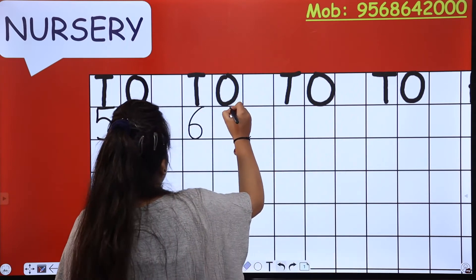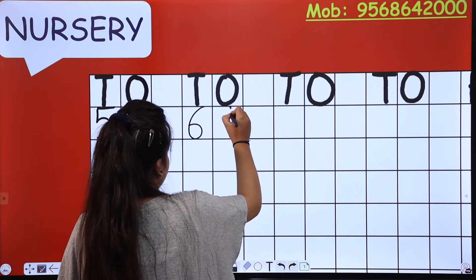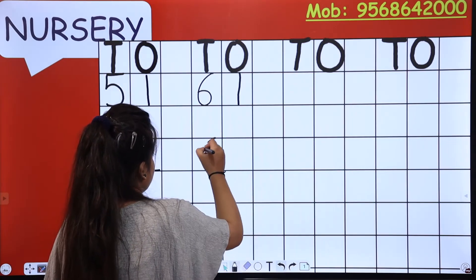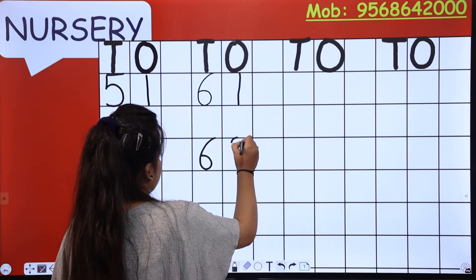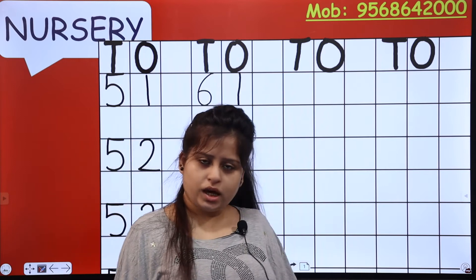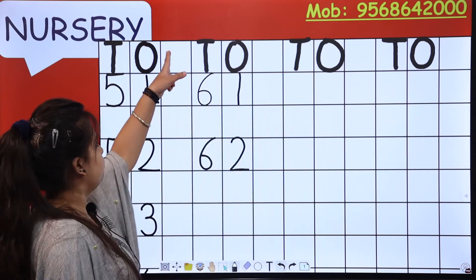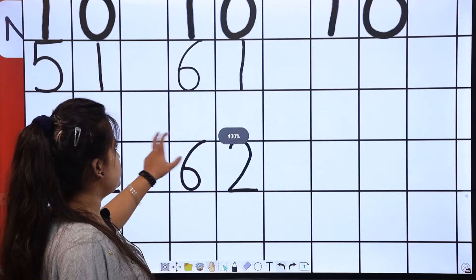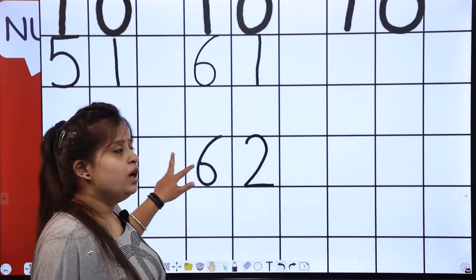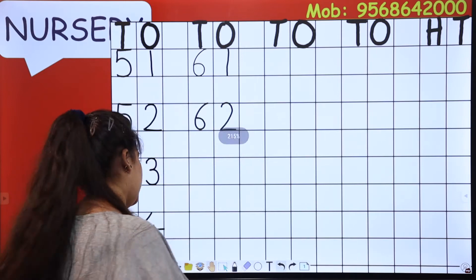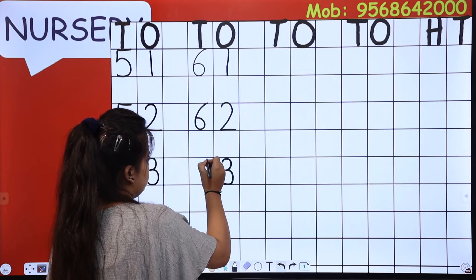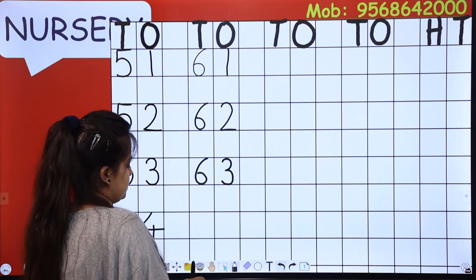So we write down sixty one. What comes after sixty one? Sixty two — 62. Don't forget to leave a block. And don't forget to leave a line. After every number you have to leave a block. What comes after two? Six three — sixty three.